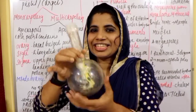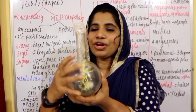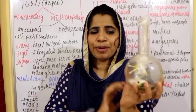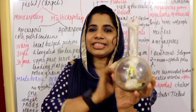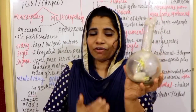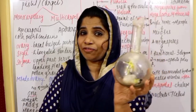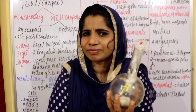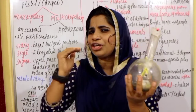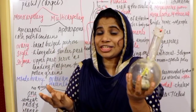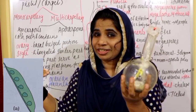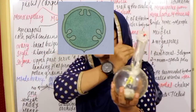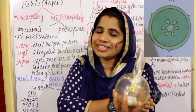Inside the ovary, there is an ovarian cavity. Within the ovarian cavity is the placenta, and ovules are attached to the placenta. The arrangement of ovules within the ovary is known as placentation. Types include marginal, axile, parietal, free central, and basal placentation — this is what we learned in first year.